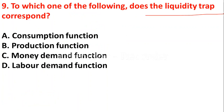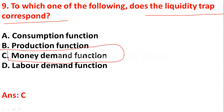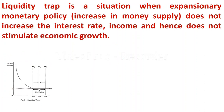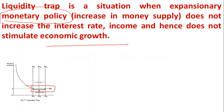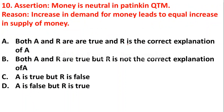The next question: to which one of the following does the liquidity trap correspond? Option A: consumption function, option B: production function, option C: money demand function, option D: labor demand function. Liquidity trap corresponds to the money demand function, so option C is the right answer. The liquidity trap is a situation when expansionary monetary policy is not working — at a very low rate of interest, people hold money and it does not stimulate economic growth.